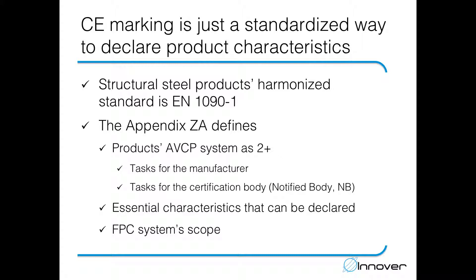In order to have enough proof to back up, for example, weldability, fracture toughness, or even durability, we are going to need a documented manufacturing process — and not just any manufacturing process, but one built according to EN 1092, which is the twin of EN 1091 and deals exclusively with the manufacturing and erection of structural steel products.